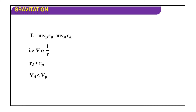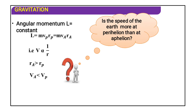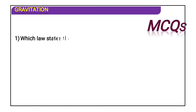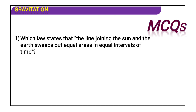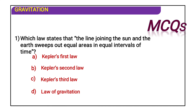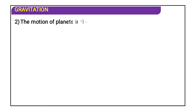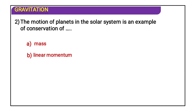From the result, v is inversely proportional to r, and the velocity at aphelion (va) is less than the velocity at perihelion (vp). Angular momentum is constant. MCQ: The line joining the sun and the earth sweeps out equal areas in equal time intervals — this is Kepler's second law. MCQ: The motion of a planet in the solar system is an example of conservation of angular momentum. Answer: angular momentum.